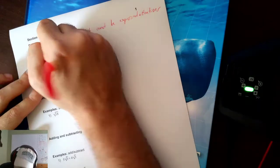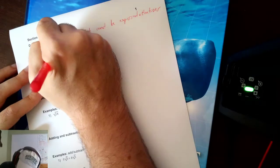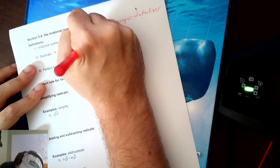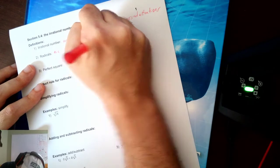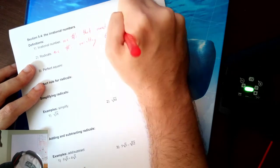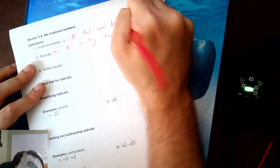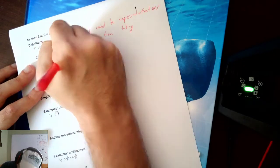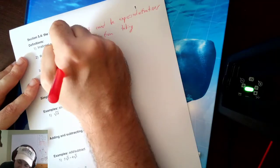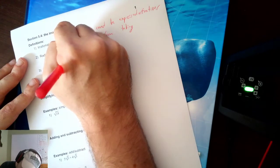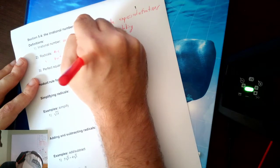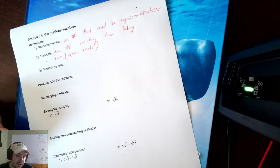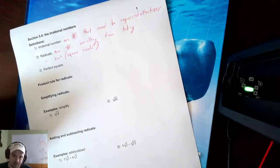Radicals, in common terms, are numbers resulting from taking a root. Specifically for our purposes, we're going to be talking about square roots. Those are not the only radical numbers, but those are the ones we're going to be talking about for our course — square roots.